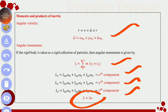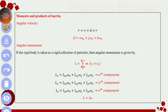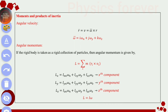This is the most important equation: L is equal to I omega, where L represents angular momentum, I represents the moment of inertia, and omega is angular velocity. Sometimes we need to choose the correct component.